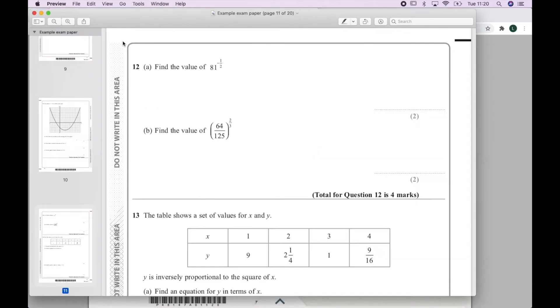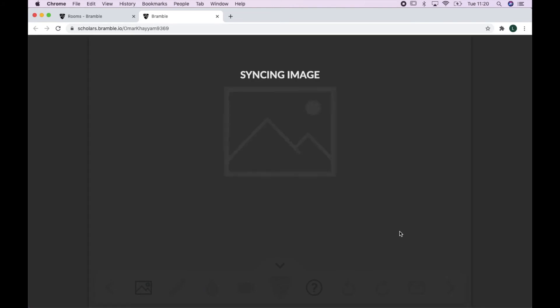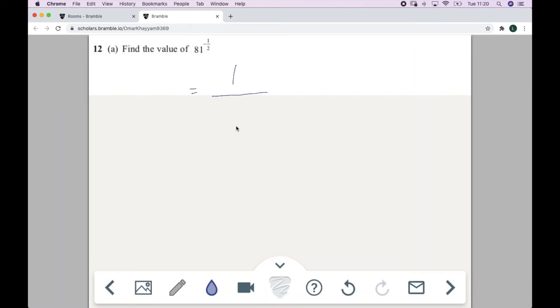So first of all, I'd open up the document on my device, then on an Apple Mac, I can simply hold down the Ctrl-Command-Shift-4 keys to choose the proportion of the document I want to share. I can then paste this specific question straight into my Bramble notebook by pressing Command-V.